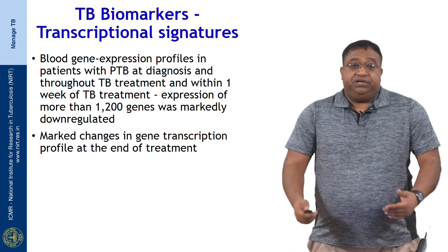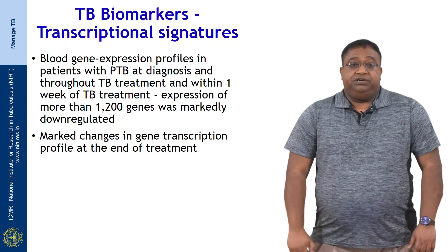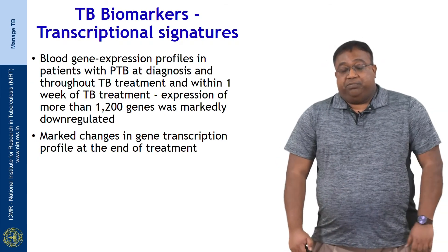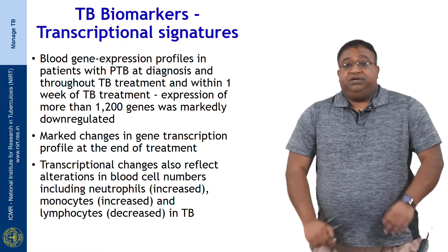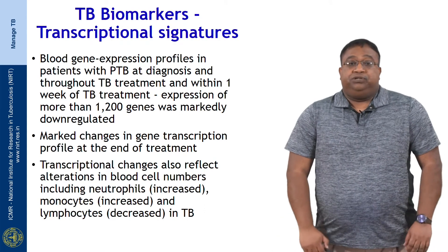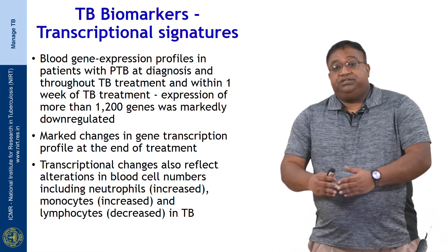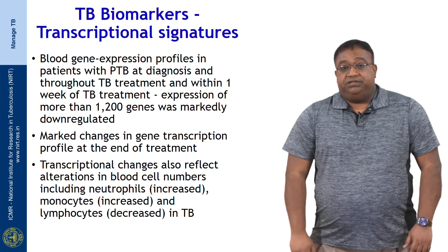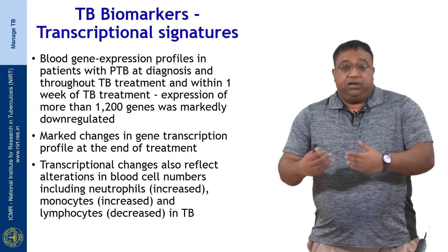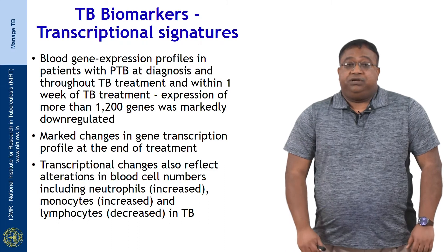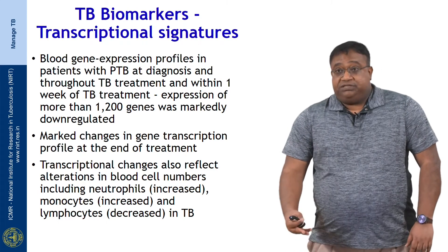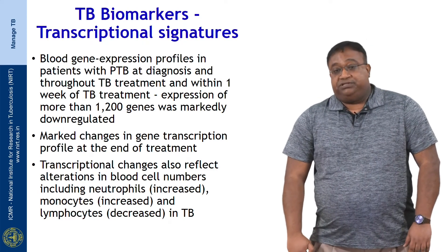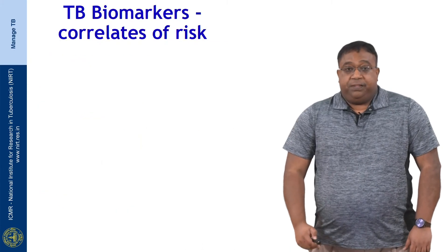These changes in gene transcription profile continue till the end of treatment. Transcriptional changes are also thought to reflect changes in blood cell numbers that occur during TB infection and disease, including neutrophils which are increased, monocytes which are increased, and lymphocytes which are decreased in TB disease.